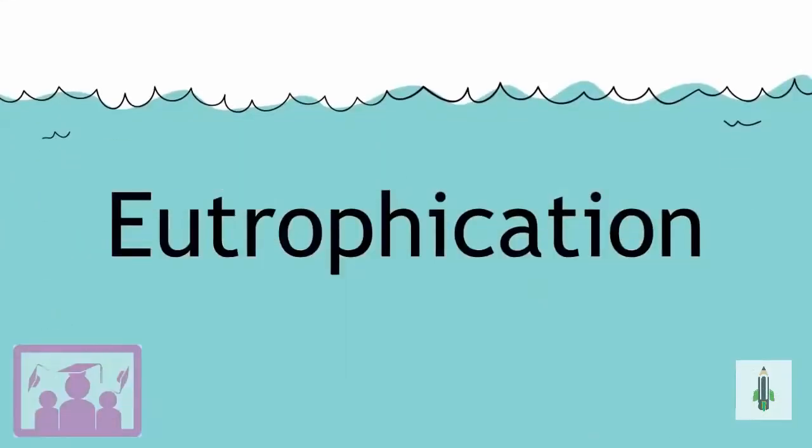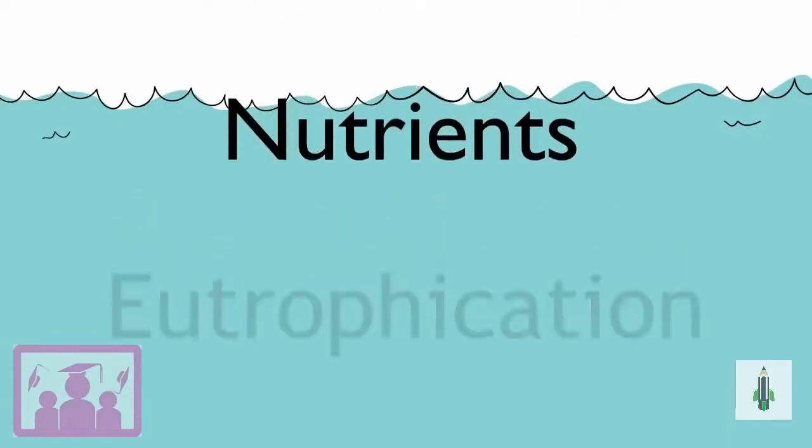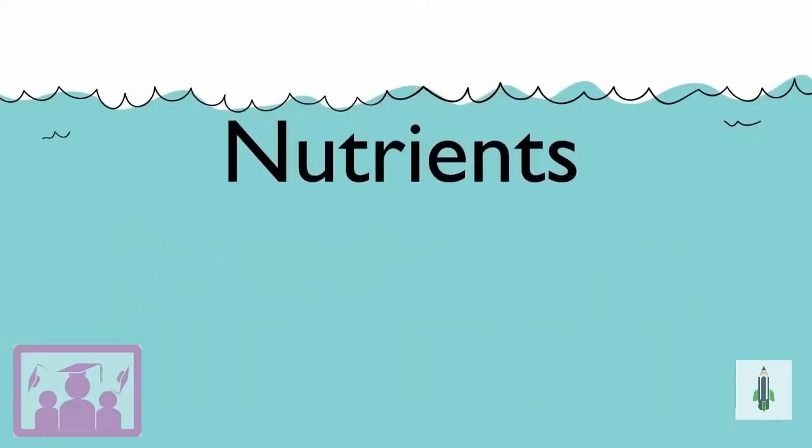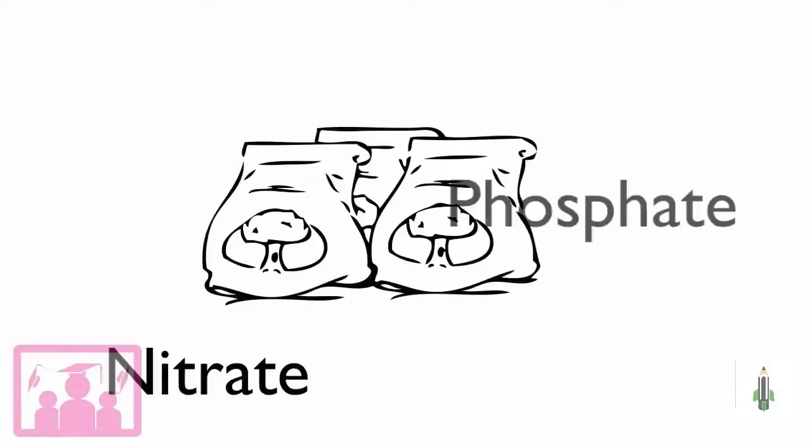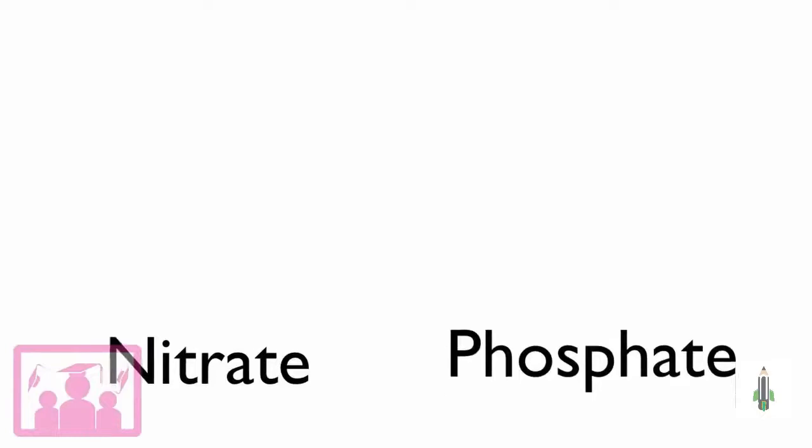Eutrophication is the process that can happen in a water body like a river or a lake when too many nutrients are added to the system. Eutrophication starts with fertilizers which are rich in nutrients like nitrate and phosphate.